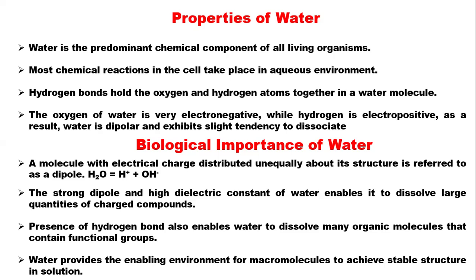Oxygen is electronegative and hydrogen is electropositive, so as a result water is bipolar in nature. There is a partial negative on the oxygen and a partial positive on the hydrogen atom, so it exhibits a slight tendency to dissociate. As a molecule with electrical charge distributed unequally about its structure, it is referred to as a dipole. When water dissociates you form the hydroxyl ion (OH⁻) and the proton (H⁺). The strong dipole and highly dielectric constant of water enables it to dissociate large quantities of charged compounds.